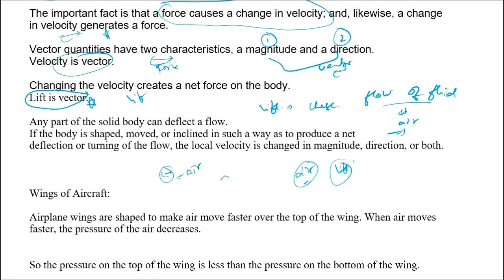How are we able to generate a change in the flow of air? With the help of the wings. The wings are inclined in such a way that we are able to turn the flow of the air. Because of this turning of the air flow, the velocity of the air is changed in magnitude, direction, or sometimes both.